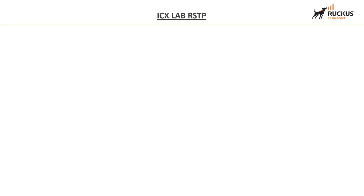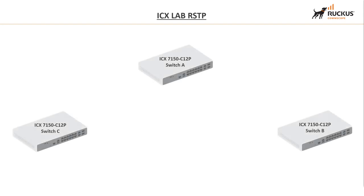Today I'm going to demonstrate how to configure Rapid Spanning Tree Protocol on an ICX switch. The easiest way to demonstrate this is to start by introducing my lab environment. I have three ICX-7150C12P switches in my lab, currently running switching firmware, and I've given them simple hostnames of Switch A, Switch B, and Switch C.